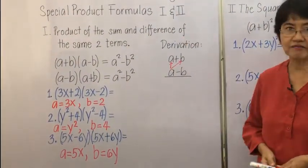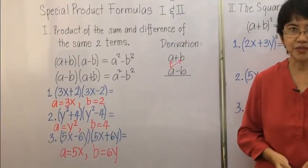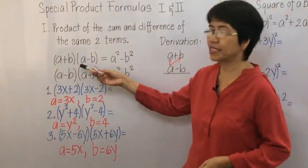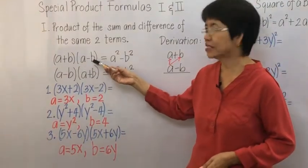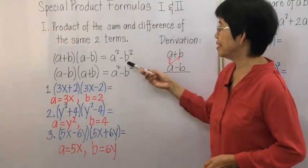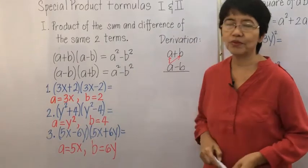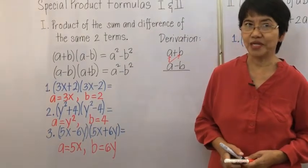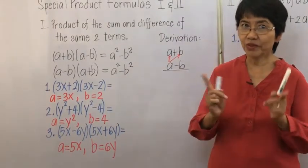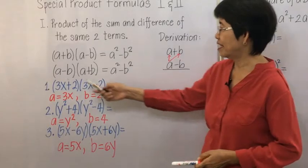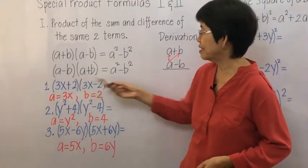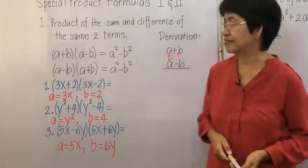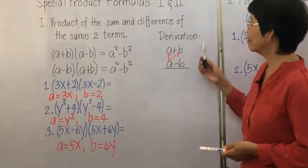The first special product formula is the product of the sum and difference of the same two terms. The form a plus b times a minus b is equal to a squared minus b squared. You can also switch the factors and still get the same answer.